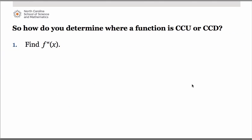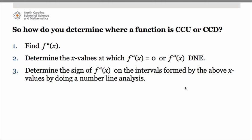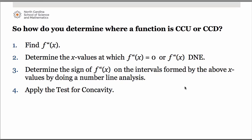So how do you determine where a function is concave up or concave down? Well, if you think about the test for concavity, remember concavity is dictated by the sign of the second derivative. So the first thing we're going to have to do is find the second derivative. Next, we will determine the x values at which the second derivative equals zero or does not exist. Third, we are going to determine the sign of the second derivative on the intervals formed by those x values, and we are going to do that by way of a number line analysis. Finally, we will then apply the test for concavity.